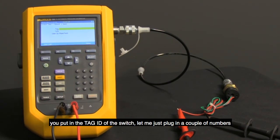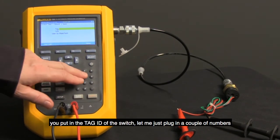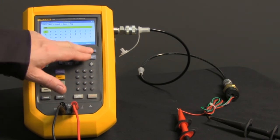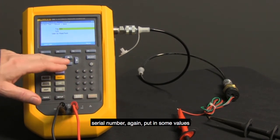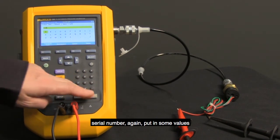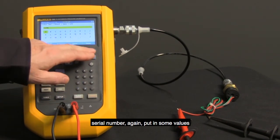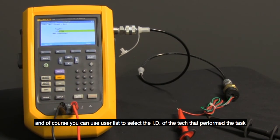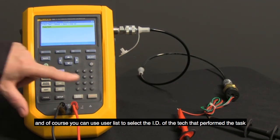You put in the tag ID of the switch. We can just plug in a couple numbers. Serial number. Again, put in some values, and of course, you can use the user list to select the ID of the tech that performed the task.